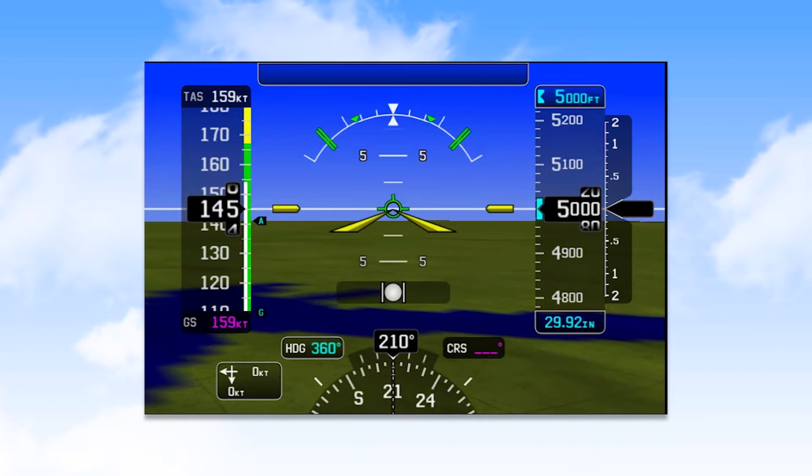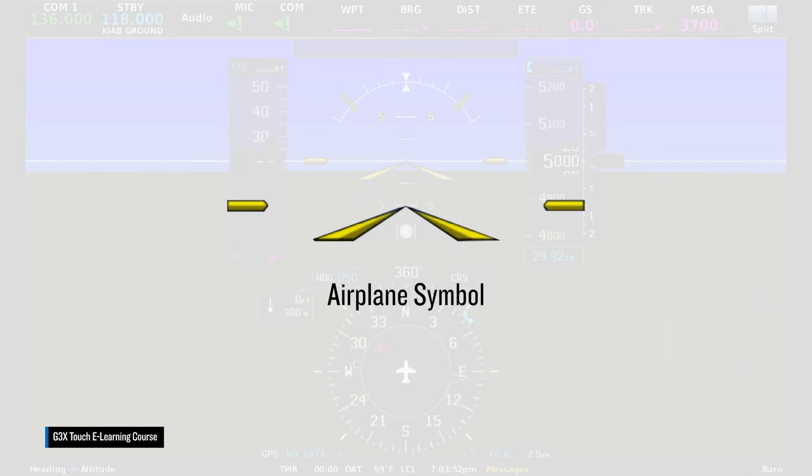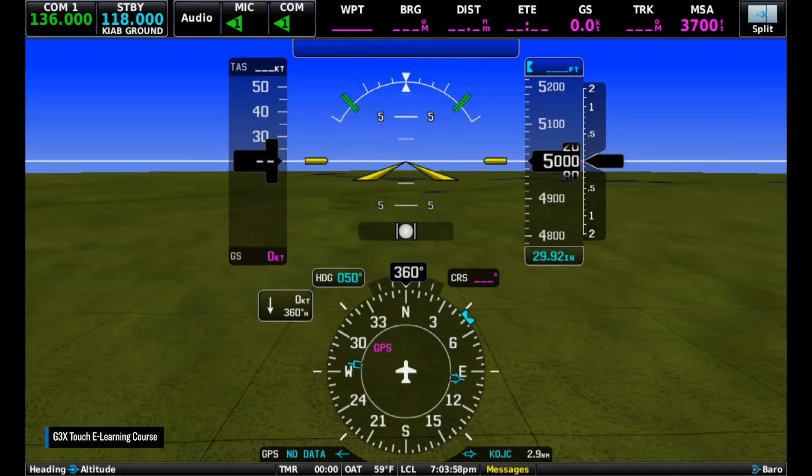Here is how we describe this in the G3X touch e-learning course. You should also note that the airplane symbol, indicated on the display by the yellow chevron and two small lines, cannot be adjusted on digital flight displays. Since the symbol is part of the display rather than overlaying it as with traditional attitude indicators, there is no parallax to compensate for.